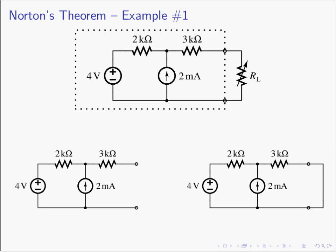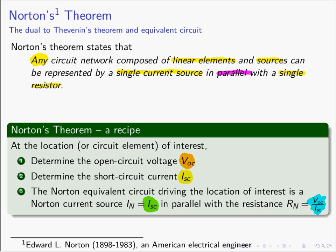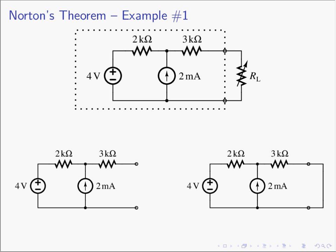We're going to look at the same circuits we did for Thevenin. I'll leave the details of the computation for you to refer back to the Thevenin video. If you look at our recipe, we need to find the same two values: V_OC and I_SC when finding a Norton equivalent circuit — and those are the same two values we need for the Thevenin equivalent circuit.